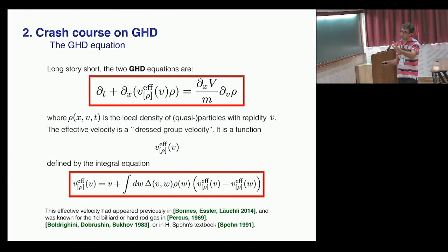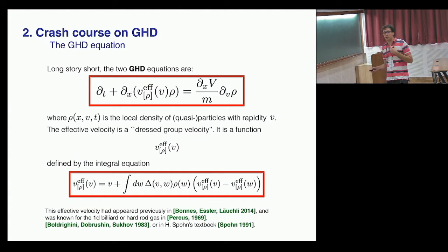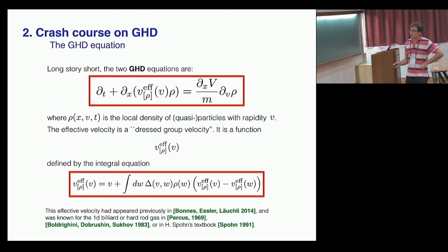The second equation is an integral equation that fixes the effective velocity entering the Liouville-like equation. For quantum integrable systems this was really new, but it had been known for a very long time in classical systems like the hard-rod gas — you can even find it in textbooks.